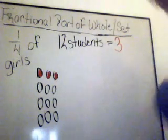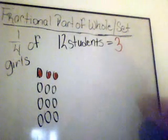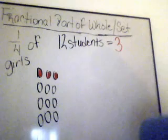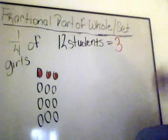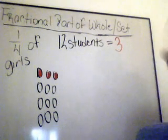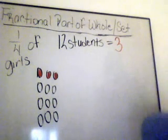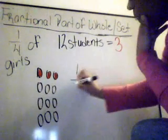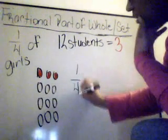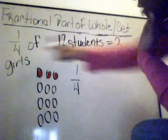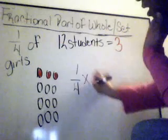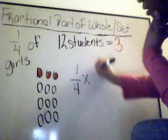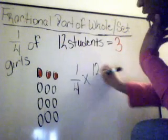Now, what if you don't have time to draw a picture? How else could you solve this problem? Easy — use numbers. You can multiply. One-fourth, the fraction, represents times 12, the total number of students.